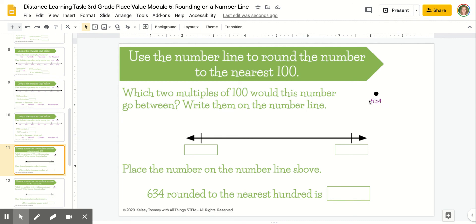So what you'll need to do is look at this number and determine which two multiples of 100 would come on either side of this number on the number line. You'll fill those in and then round 634 to the nearest hundred and type your response down here.